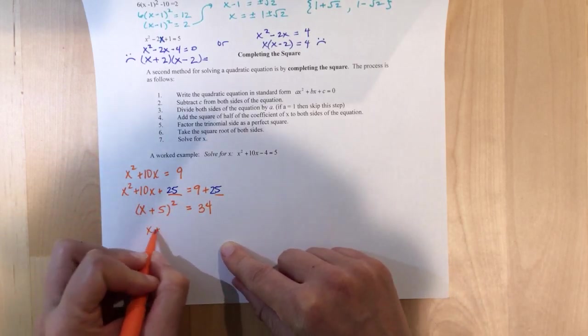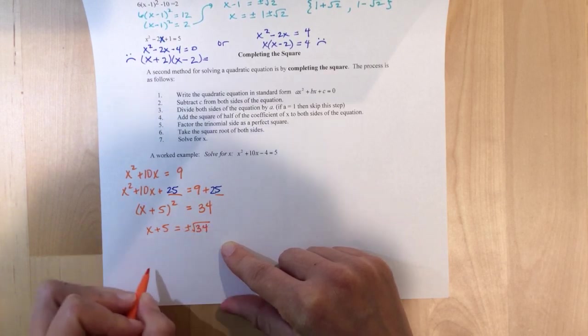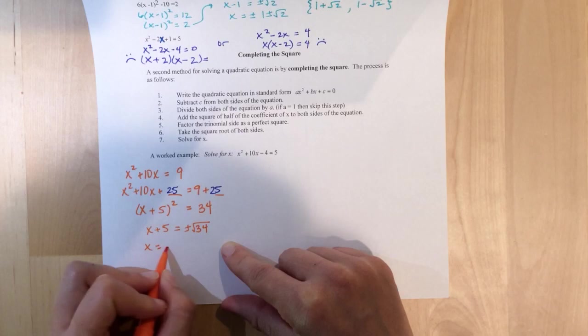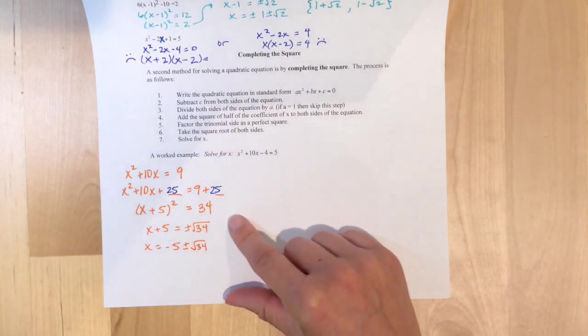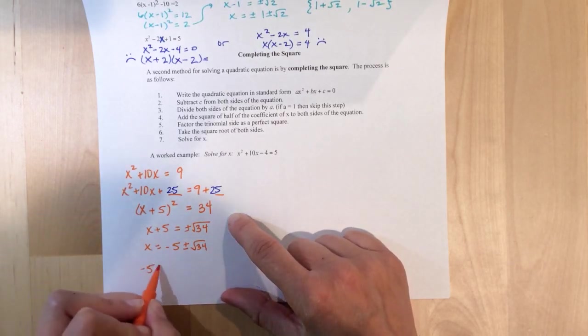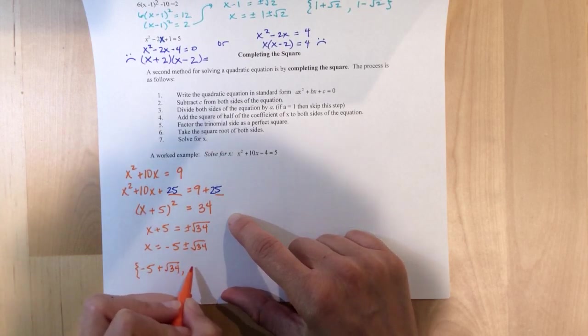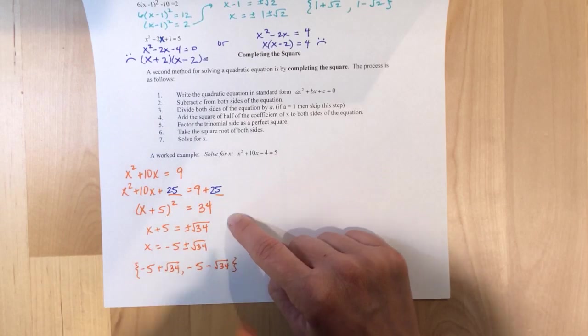But now, to actually solve for x, we need to unravel by using that square root method. So, I'm going to square root both sides. x plus 5 equals the positive or negative root 34. Now, subtract the 5. So, minus 5 plus or minus root 34. So, I've got minus 5 plus the square root of 34 and minus 5 minus the square root of 34. And, that's our answer.